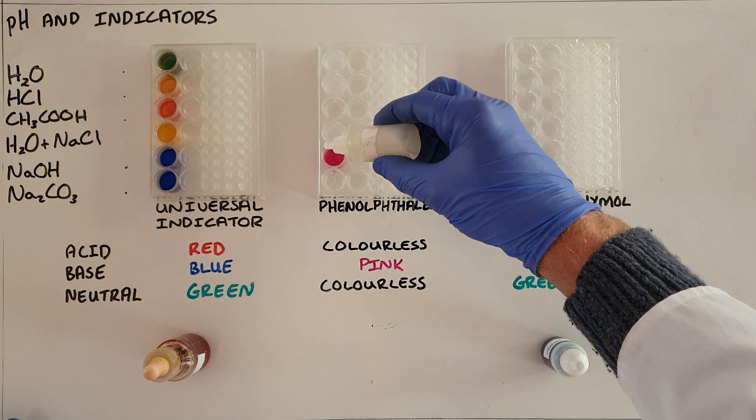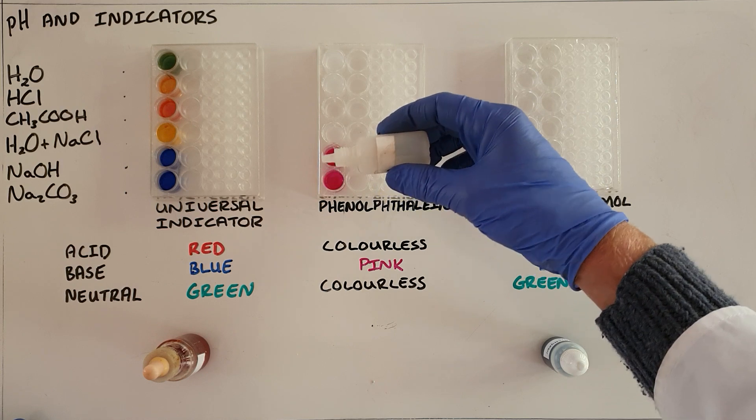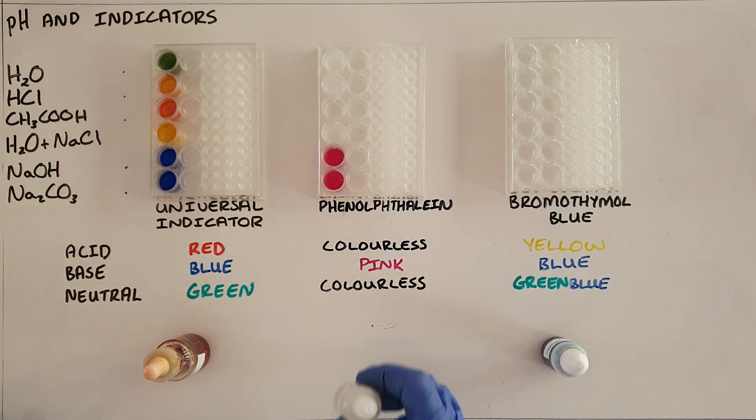Sodium hydroxide we can see immediately turns pink which tells us that that is a base and sodium carbonate also very clearly a base there. So phenolphthalein is used largely for identifying bases.